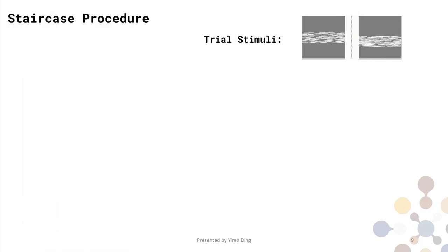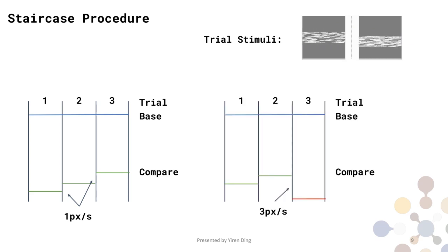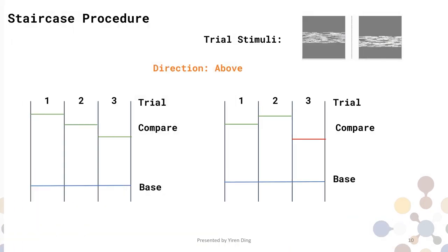In each trial, there will be two stimuli displayed side by side. One uses base value, and another one uses the compare value. The idea of the staircase procedure is simple. If participants give us correct answer, the next trial will be harder. And if they give us a wrong answer, the next trial will be easier. As you can see, all compare values are smaller than the base value, so we call this the below direction. And here is the above direction. The compare value is always larger than the base value.